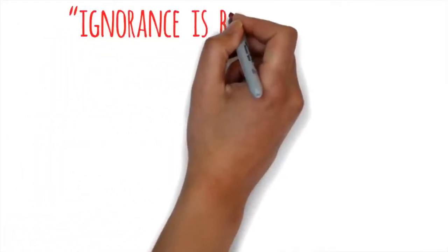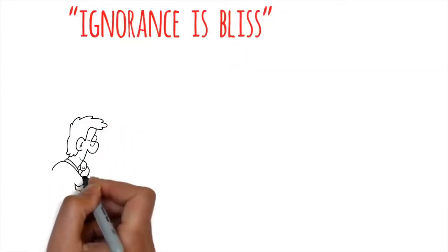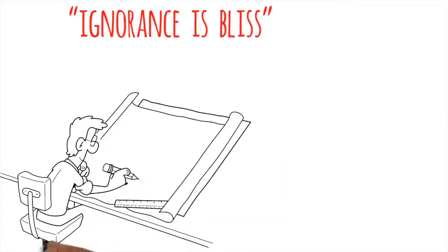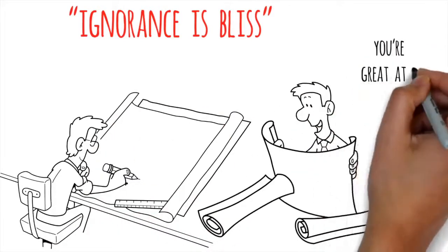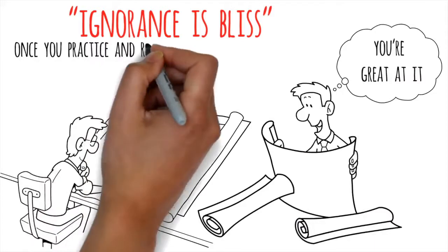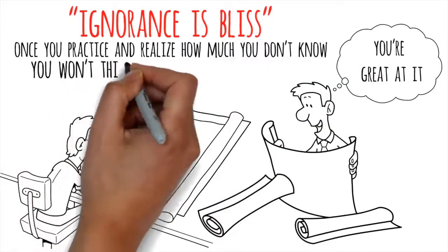The Dunning-Kruger Effect basically proves the old adage, ignorance is bliss. Let's say you're trying to learn how to draw. When you finish your first drawing, you'll probably think you're great at it. But once you practice and realize how much you don't know, you won't think you're very good anymore.